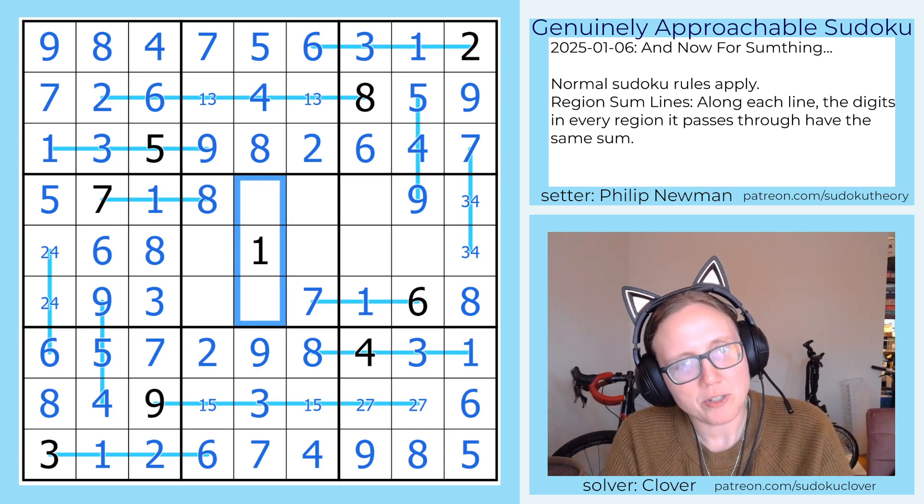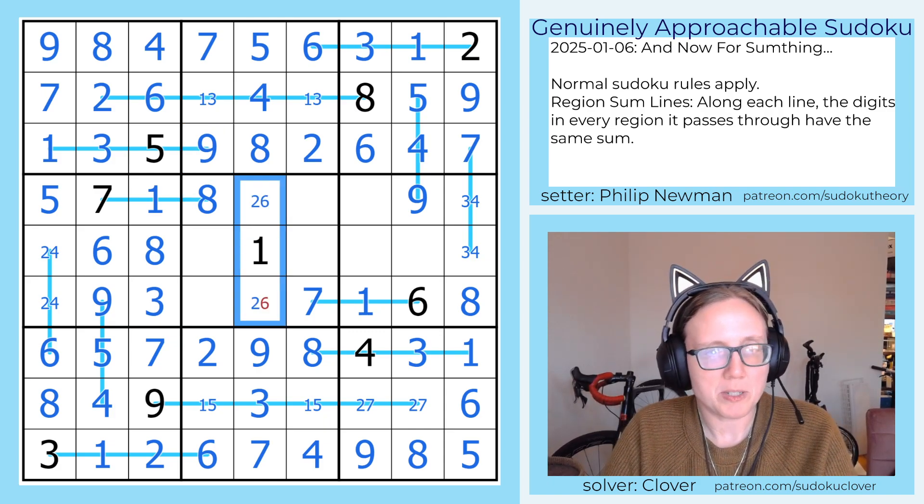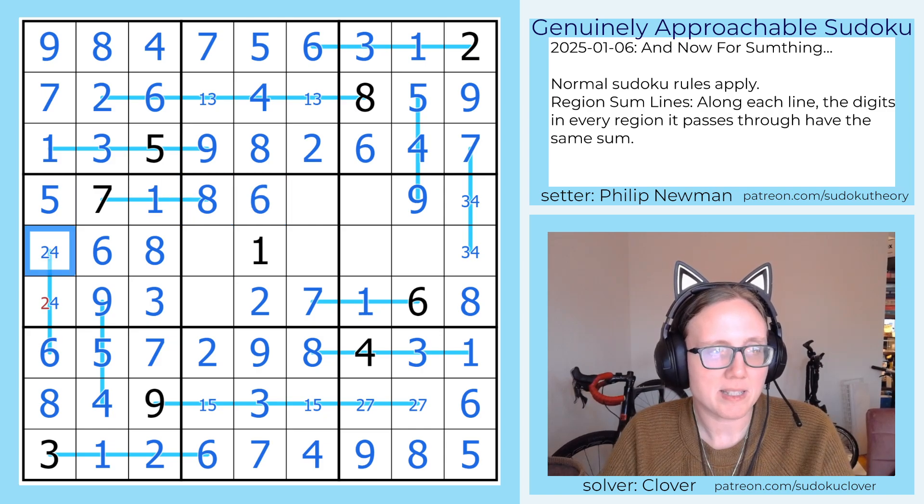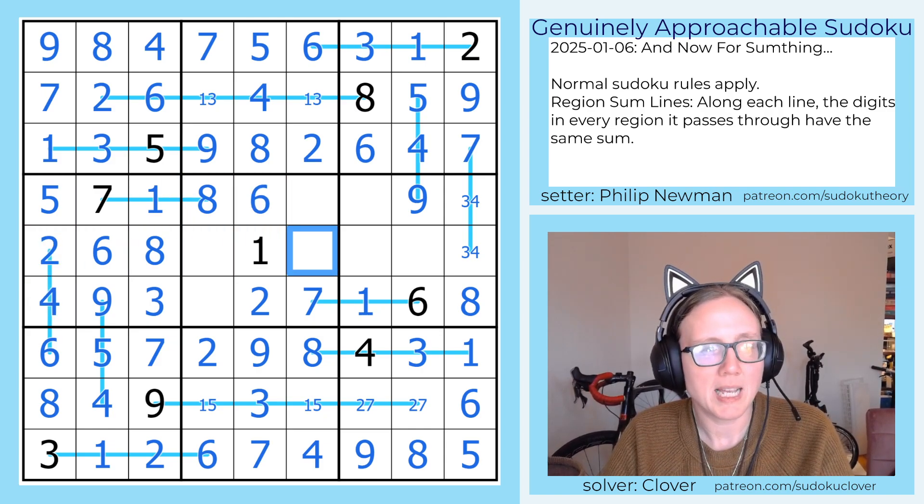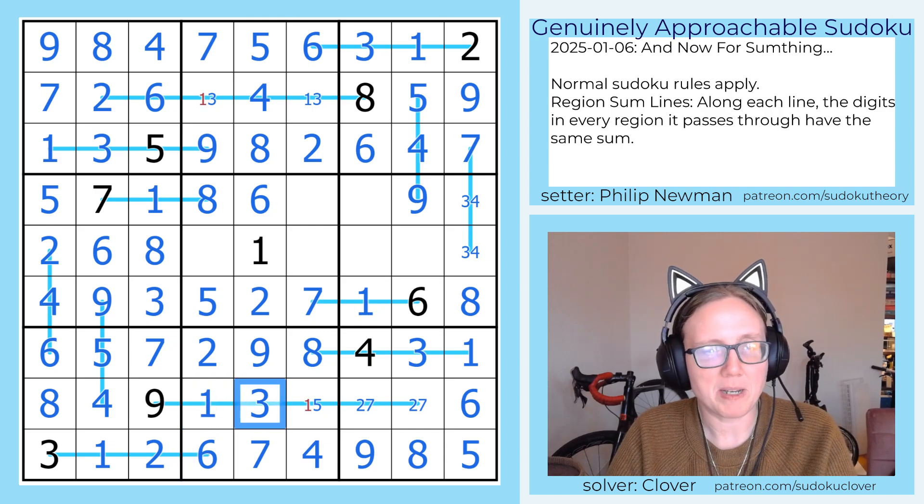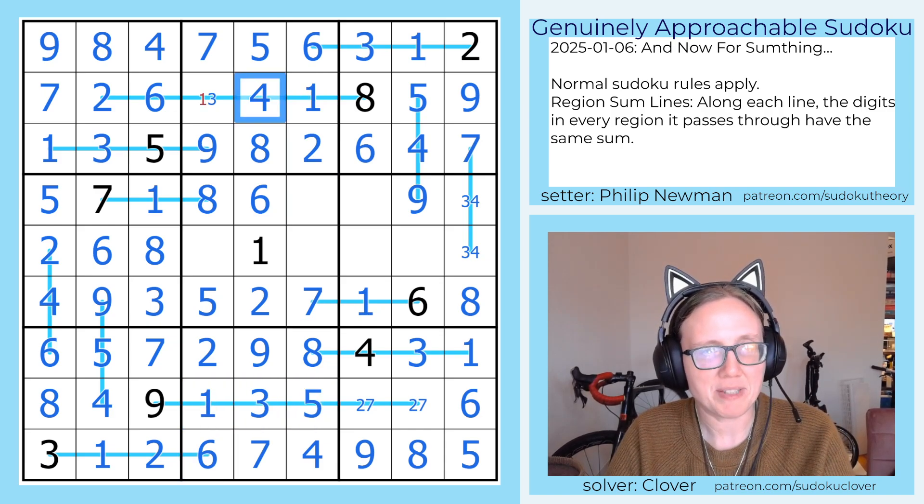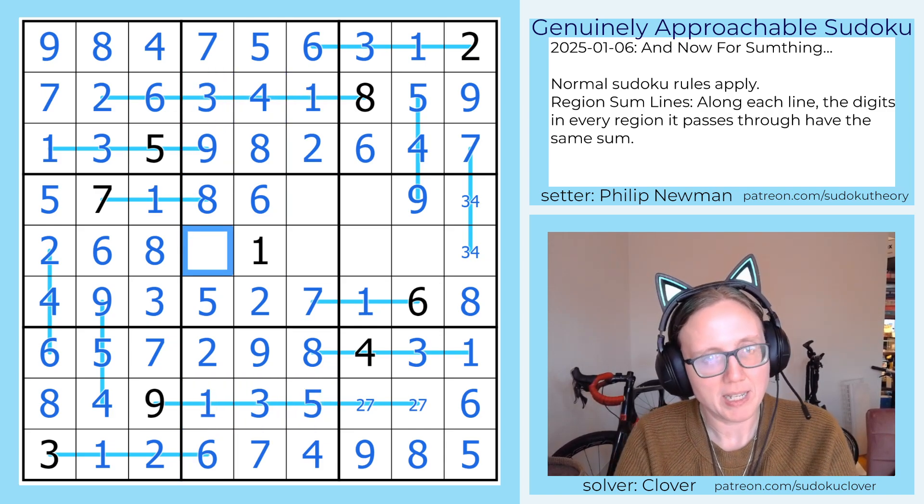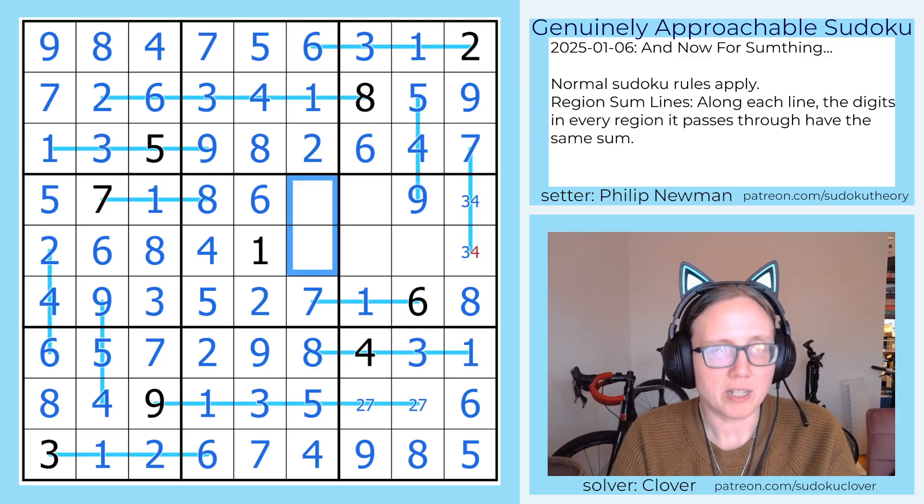These two digits are the last two in the column, so those will be 2 and 6, which go like this. And the last digit in this row will be a 5, which resolves my 1s, 5s, and 3s beautifully.